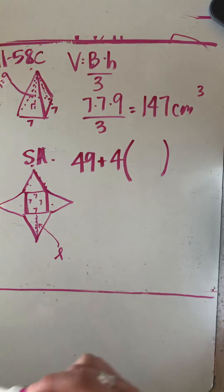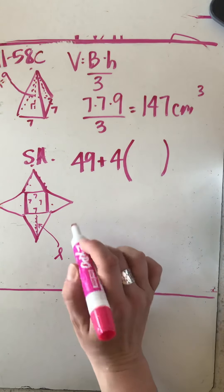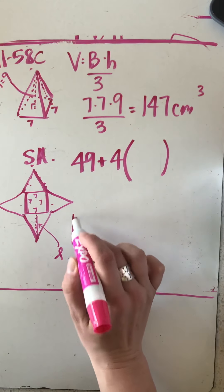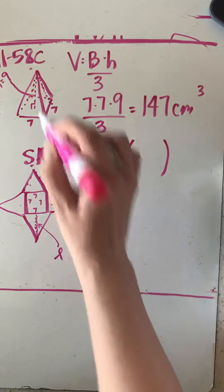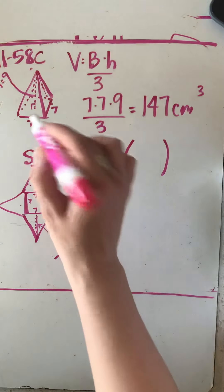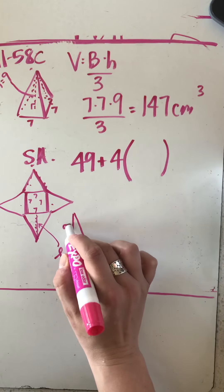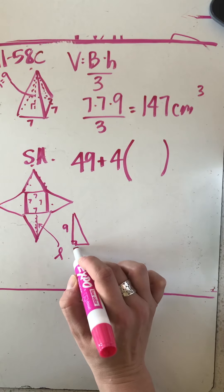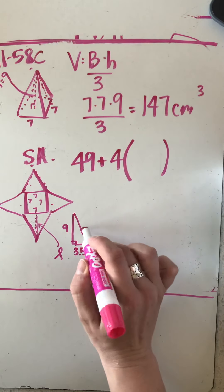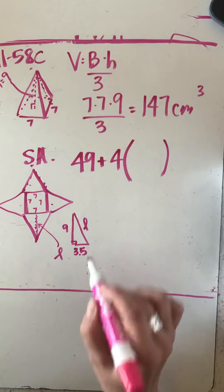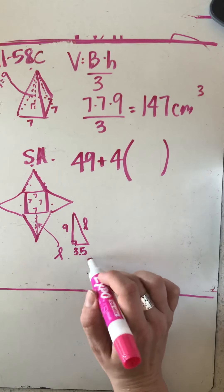Now remember from the last lesson that in order to find the slant height you usually have to create a right triangle using the height of the pyramid and half the base. So the height of a pyramid is nine, half of seven is 3.5 which would make my slant height. I'll have to use a Pythagorean theorem to figure that out.